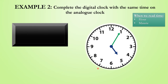Here we see that the analog clock has been completed with the time while a blank digital clock has been given. We need to complete the digital clock with the same time that is on the analog clock. Let's first determine what time is displayed on the analog clock.